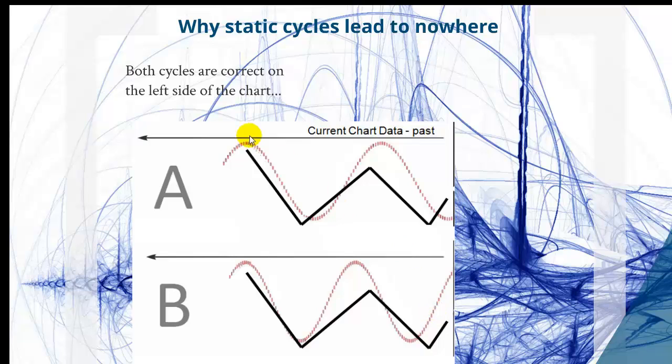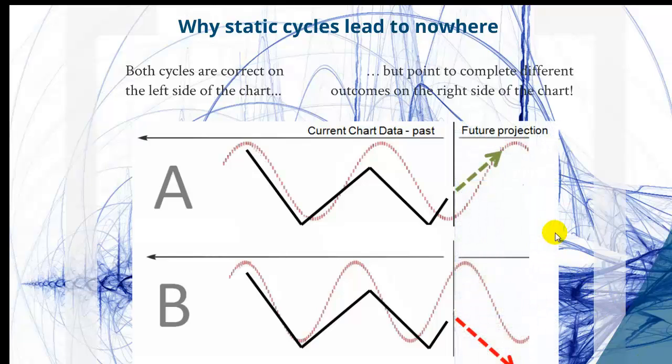If you just look at the left side of the chart, both cycles are correct on the left side. Now the interesting part comes if we move over to the right side of the chart where we will place our trading. The first projection would give us this situation that we're in the bottoming area and would expect an up move here from this situation. However, if we would follow the second projection, that would tell us that we're at the cycle top, so we should expect a down move from here.